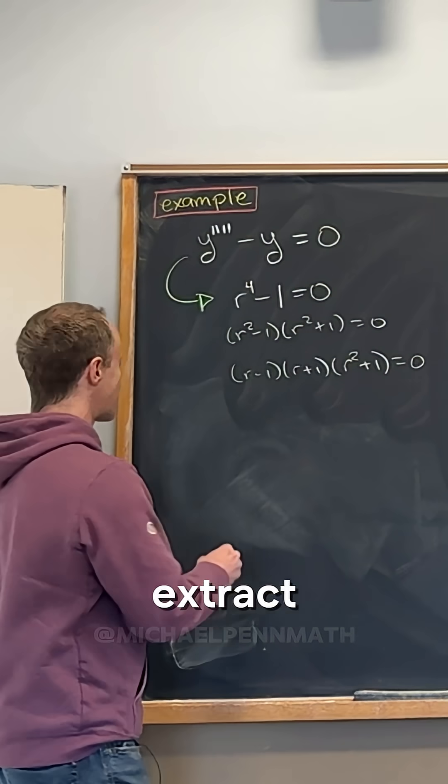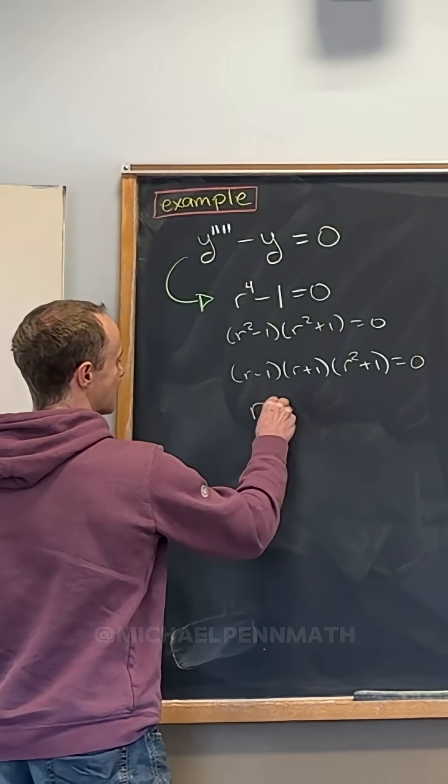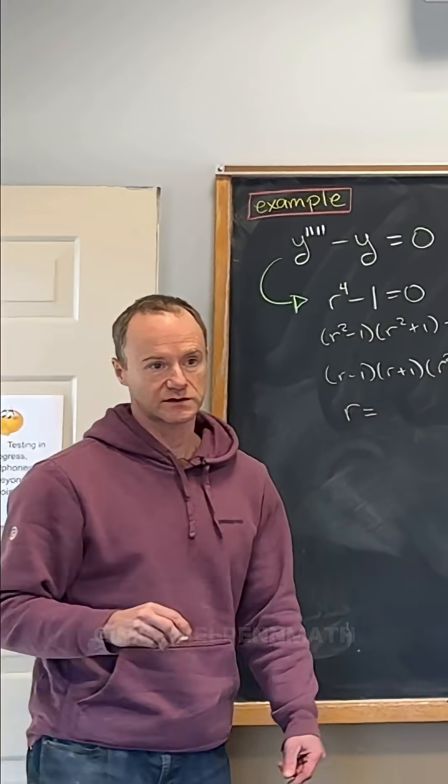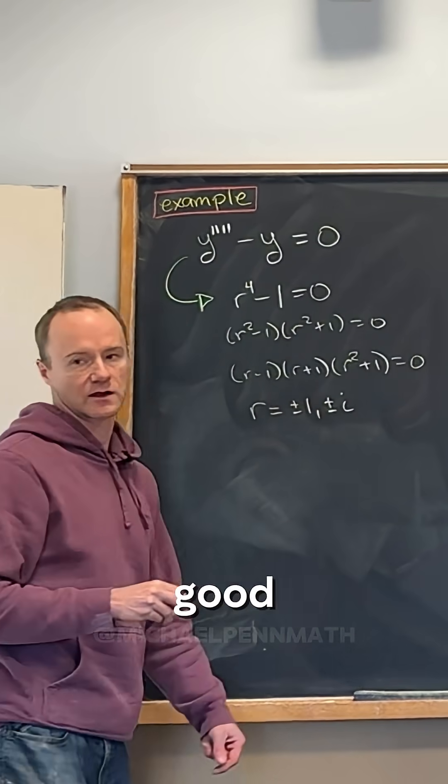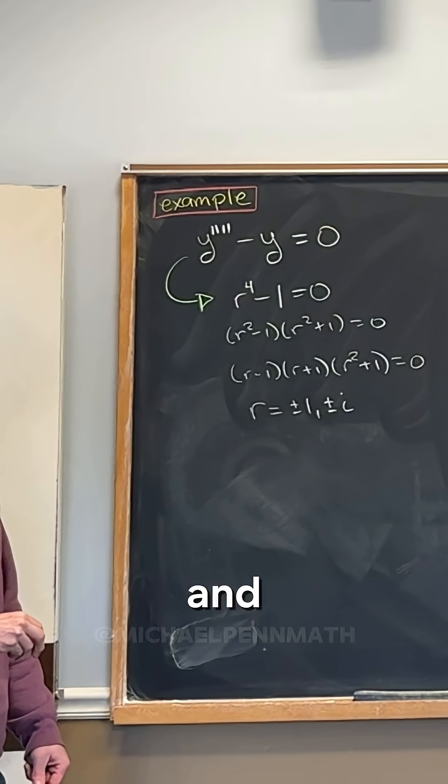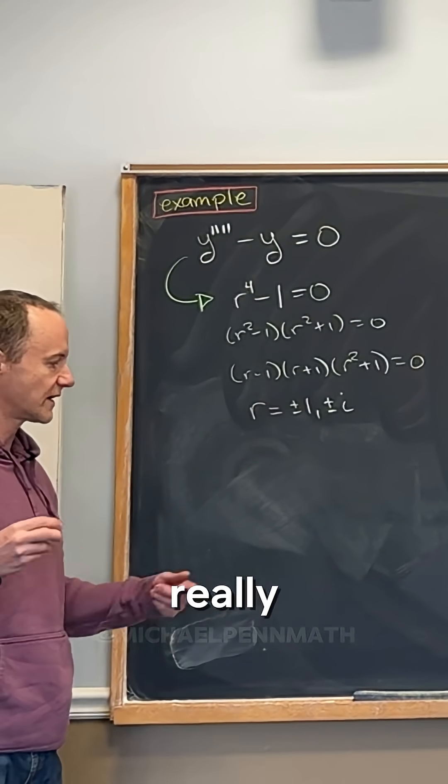But we can extract the roots from this data that we have, so we have four roots. And what are those four roots? Yeah, good. Plus minus one, plus minus i. And now from just a really quick extension